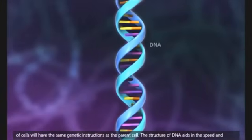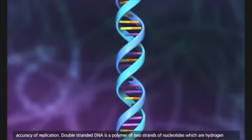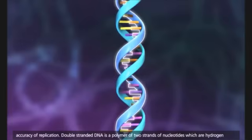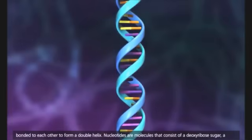The structure of DNA aids in the speed and accuracy of replication. Double-stranded DNA is a polymer of two strands of nucleotides, which are hydrogen-bonded to each other to form a double helix.